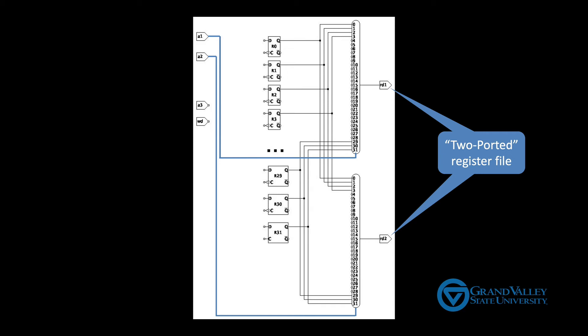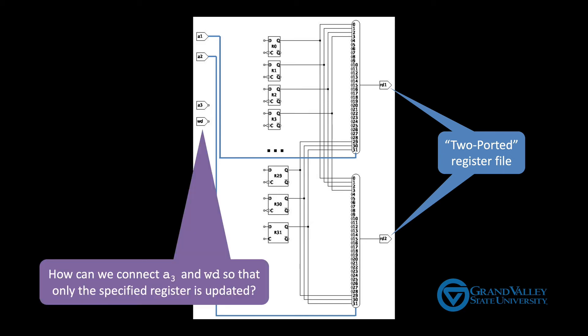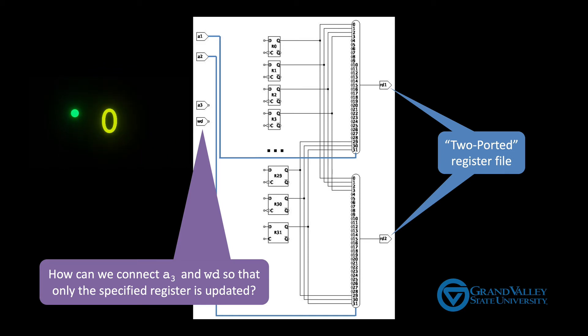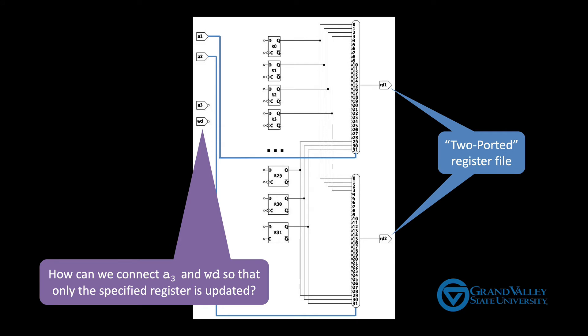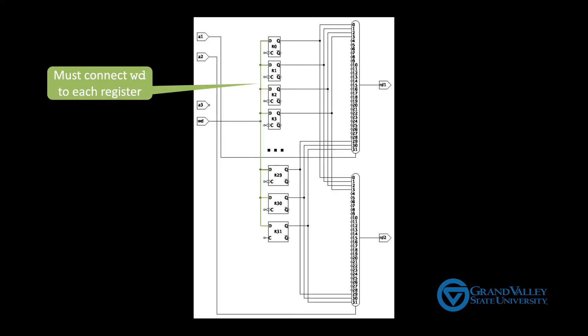After performing the desired calculation, we need to be able to write the result back into the register file. The challenge is to get the data to be written to the correct register in a way that only the desired register is updated. This is a bit tricky. Pause the video and see if you can figure it out. Okay, the first two things to notice are: one, there needs to be a path from the write data input to each register. If any part of this path were missing, there'd be at least one register that we couldn't write to. Second, each register needs an additional enable input to specify whether that register should take on a new value, because the circuit drawn here will simply update all the registers on every clock cycle, and that's not what we want.